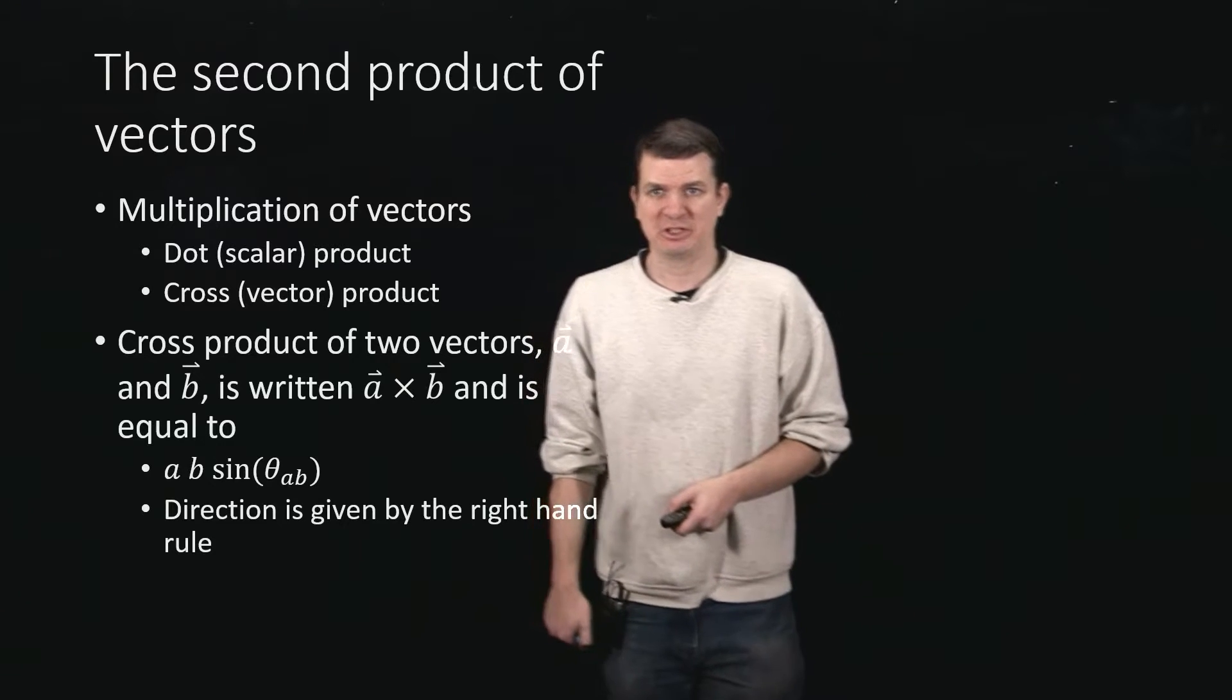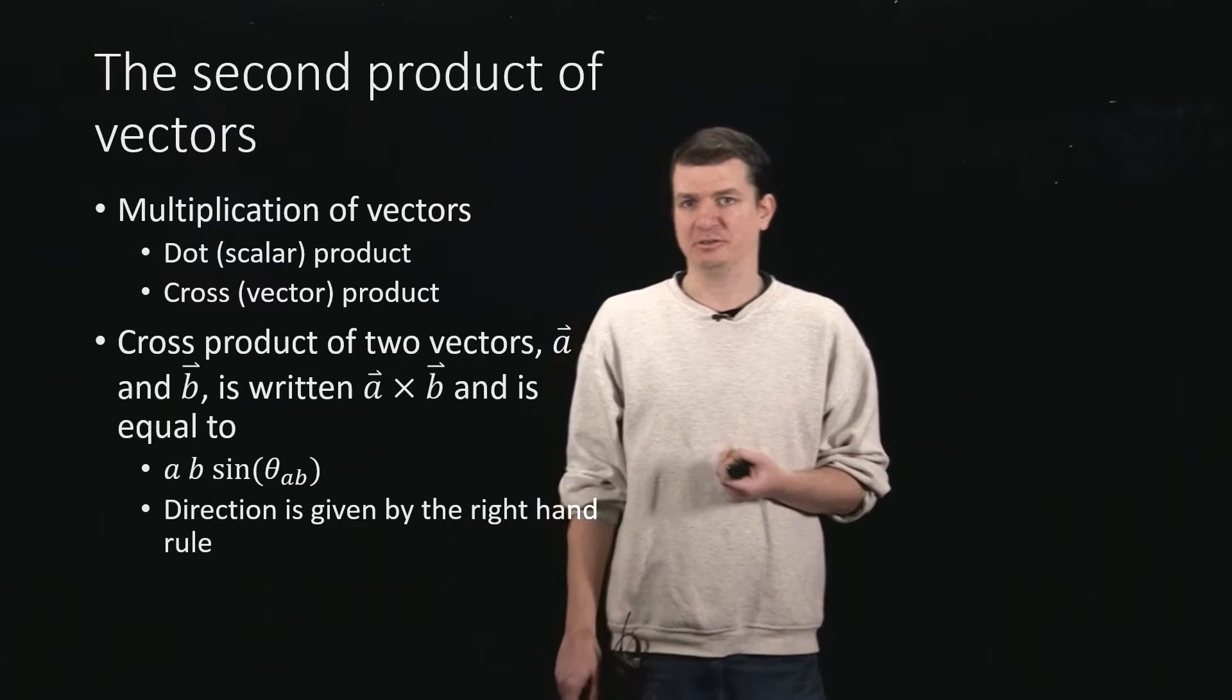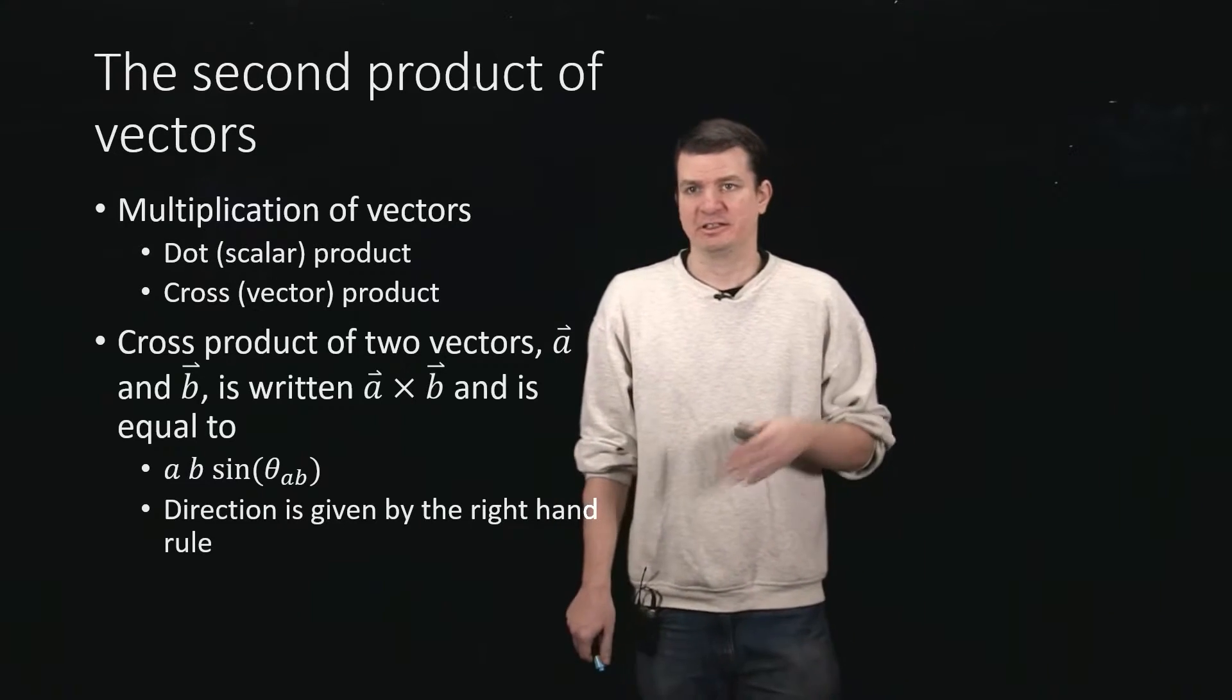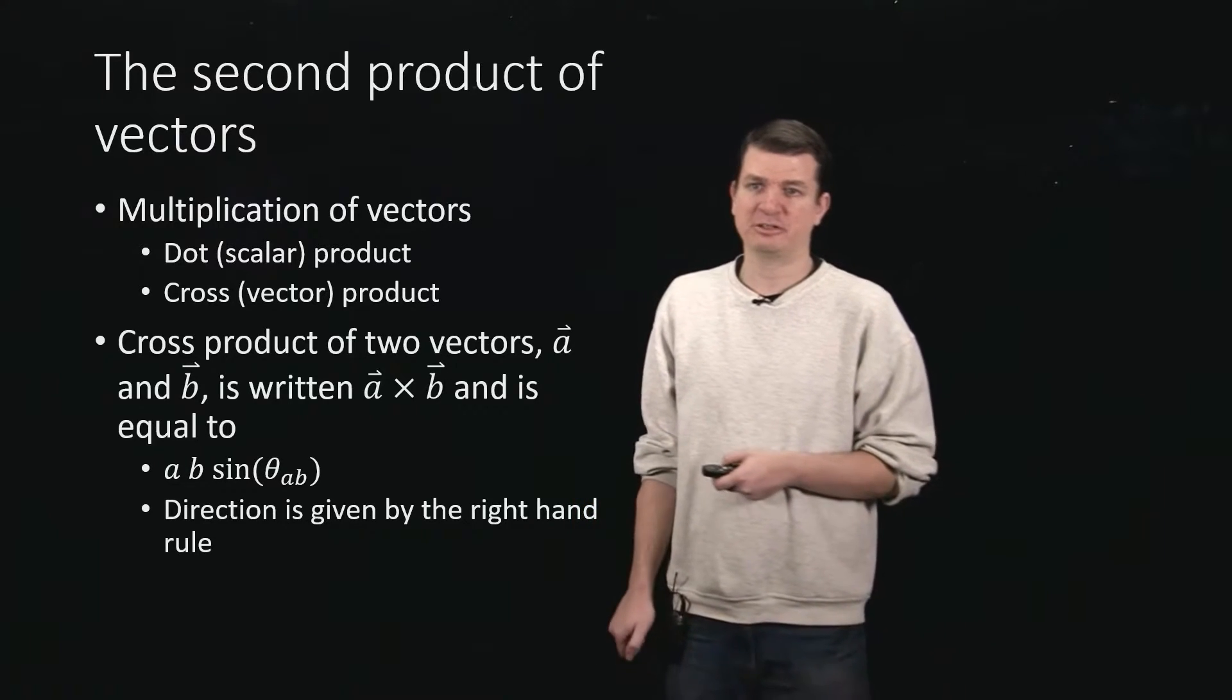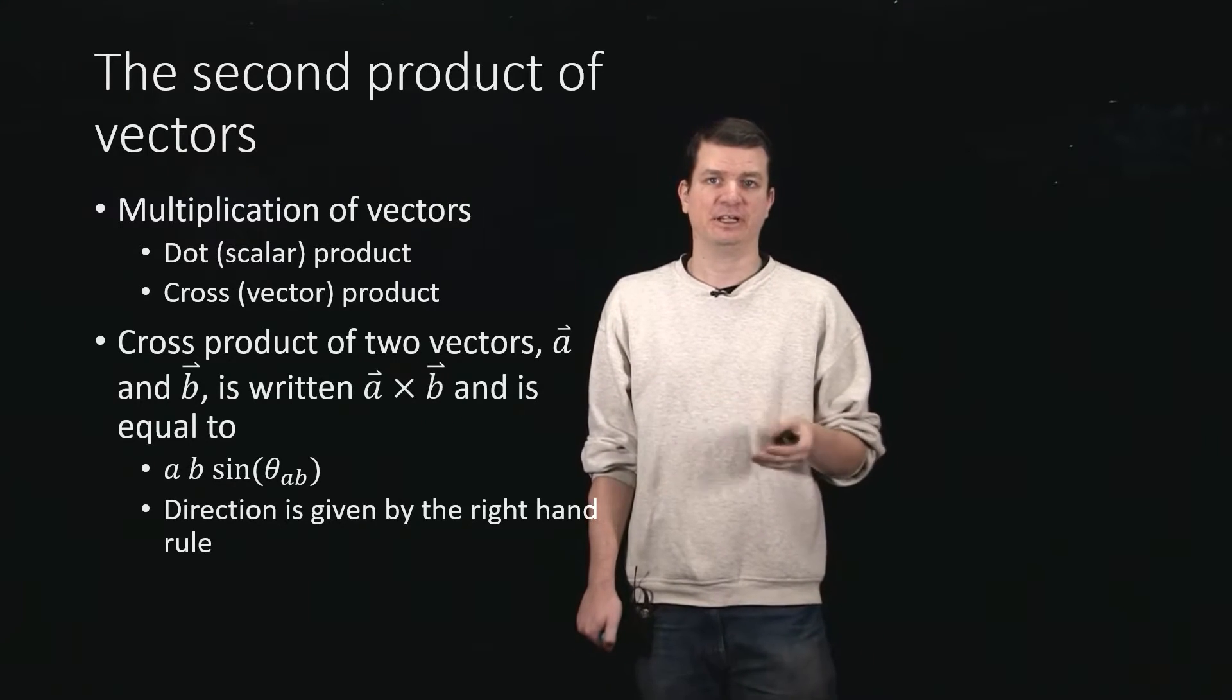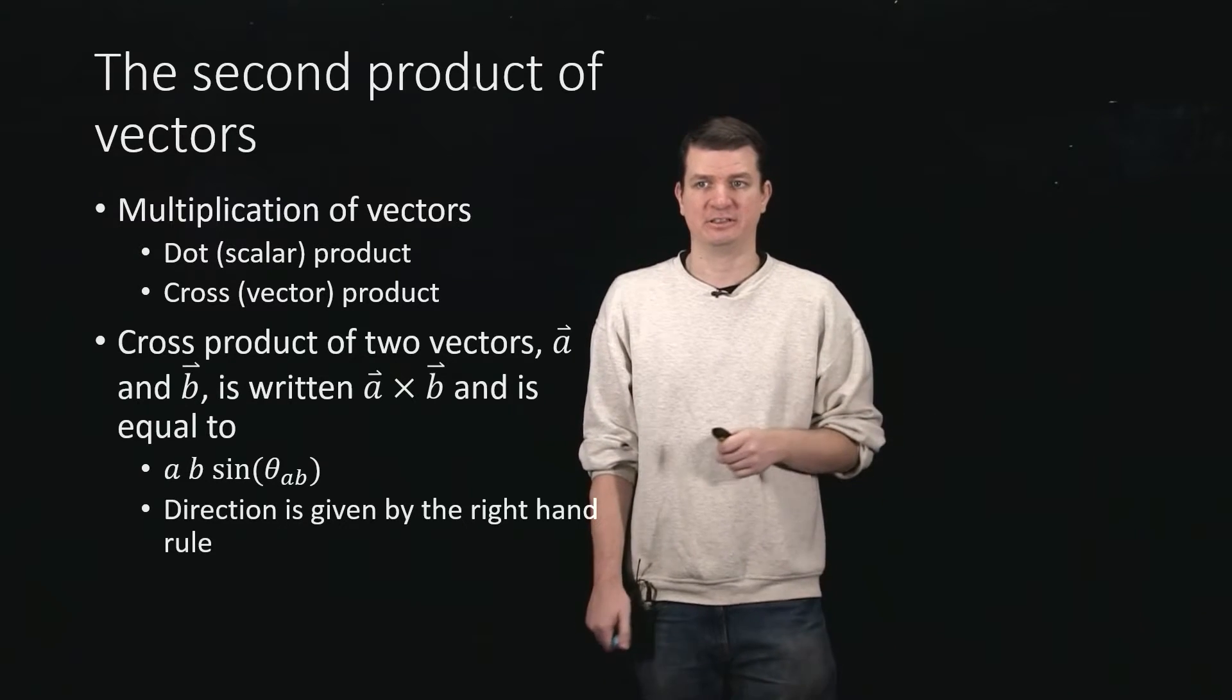We've talked about the fact that there are actually two types of products I can do if what I'm multiplying are vectors. There's a separate video on the dot product which has introduced a lot of this idea. In this case, we are talking about the cross-product, which is going to give rise to a vector. So this is a cross-product or vector product of two vectors.